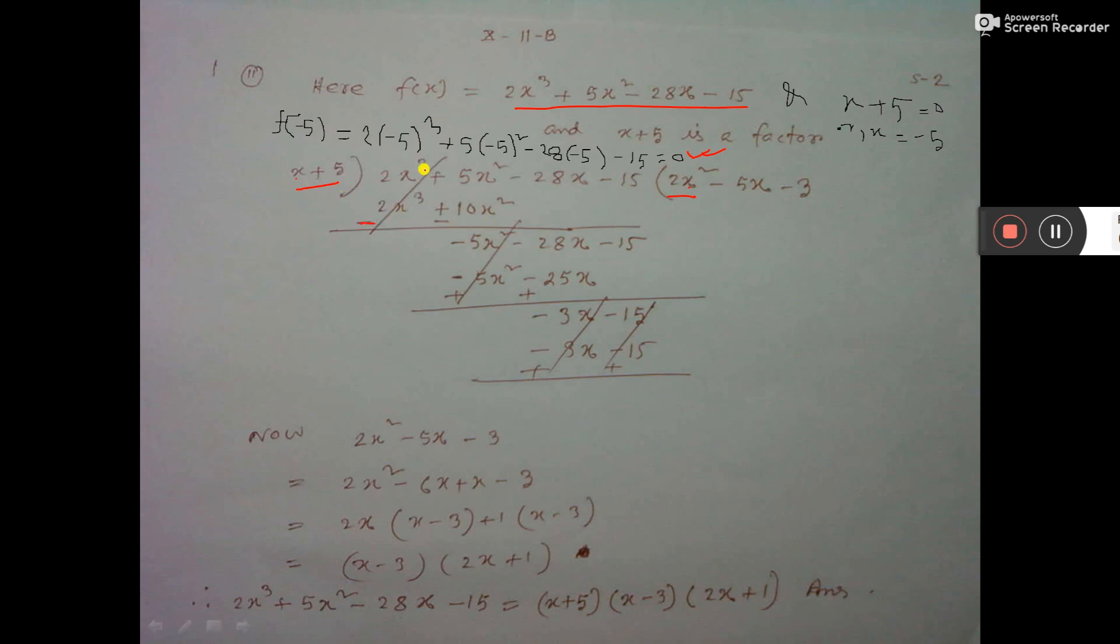Now, if you subtract, then this will cut, plus minus cut. And then 5x square minus 10x square, it is minus 5x square. The remaining, you write here.